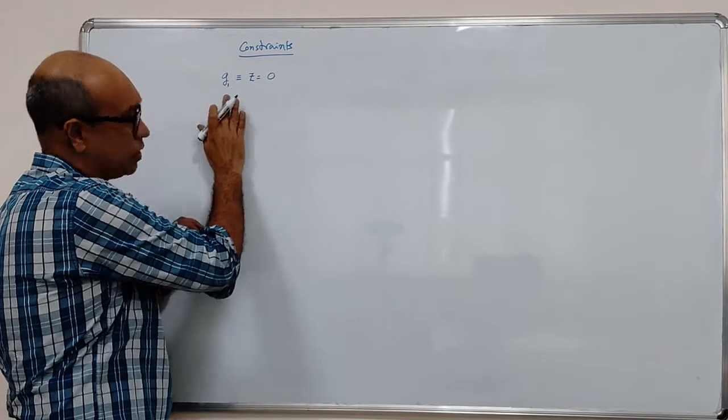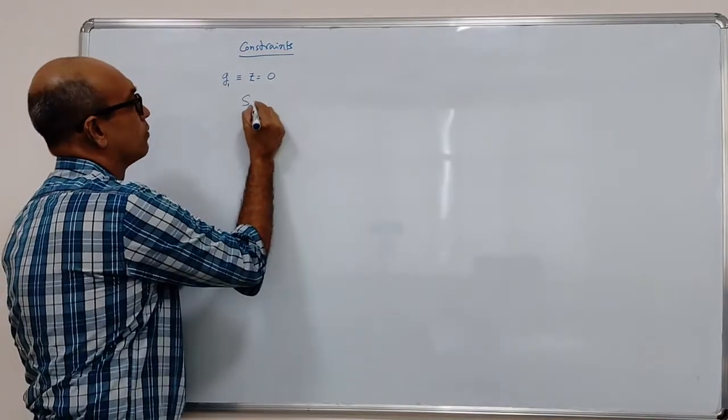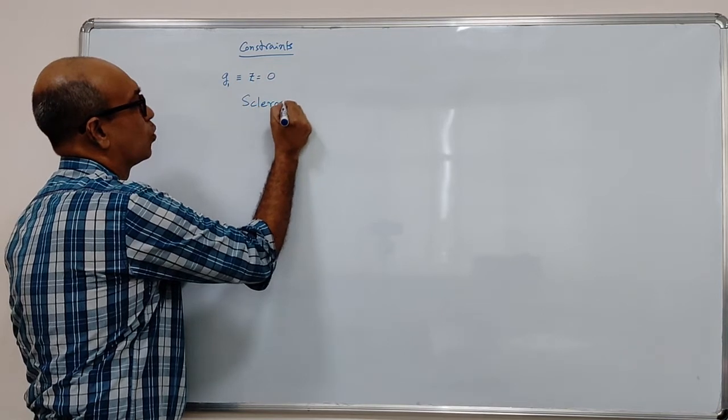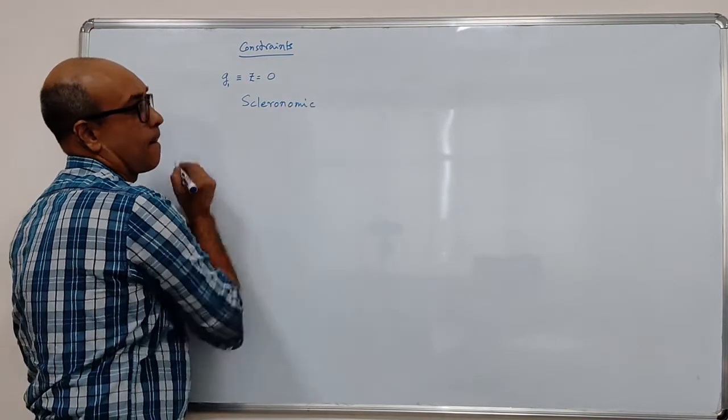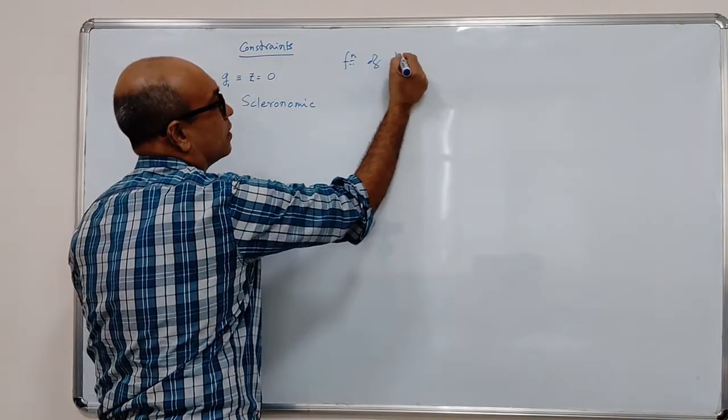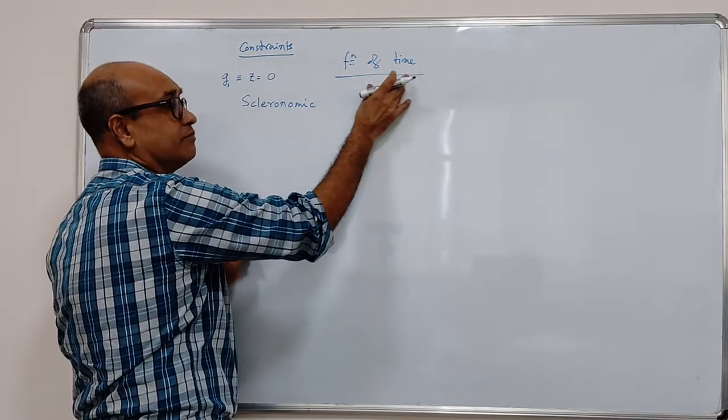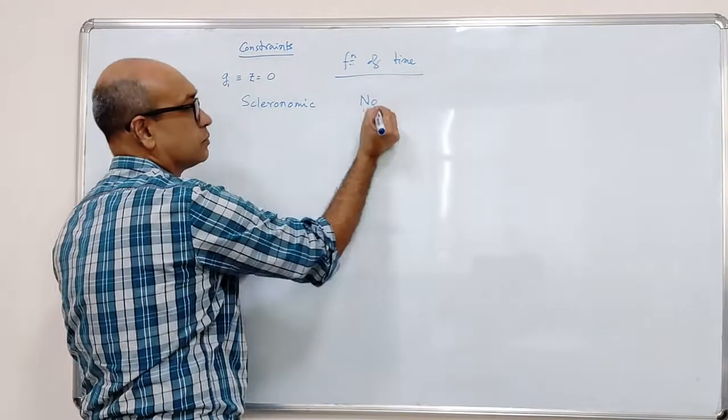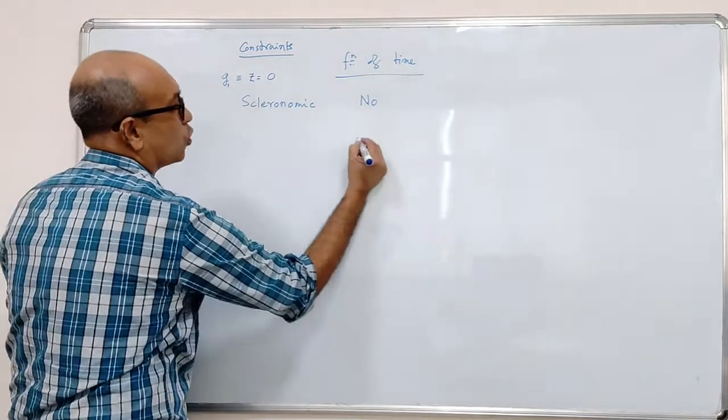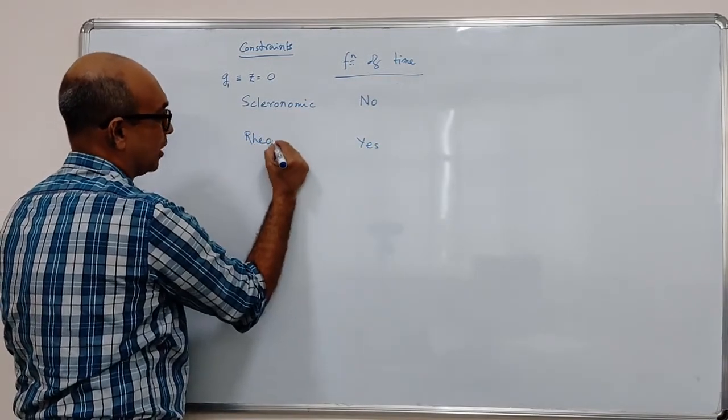Constraint equations which are not functions of time, we call them scleronomic. We check whether it's a constraint relation in the function of time. If it is not, then it is scleronomic. What about if it is yes, then it's rheonomic.